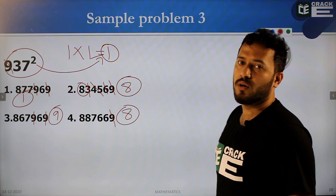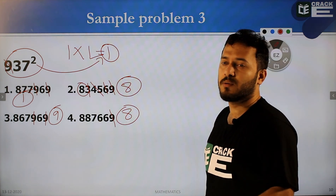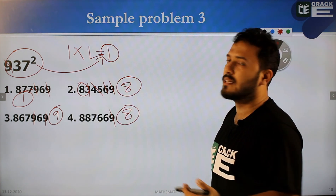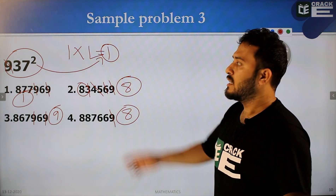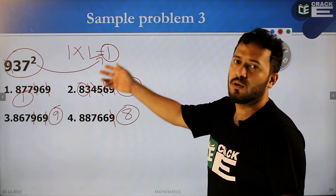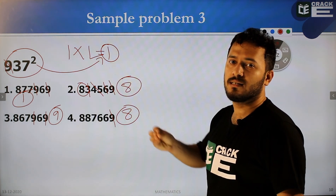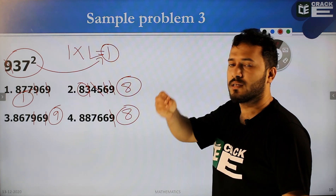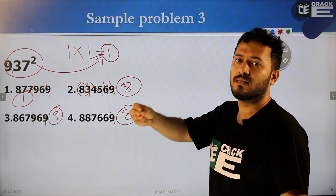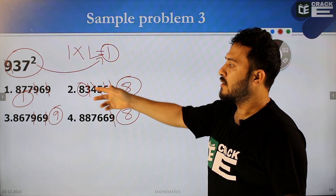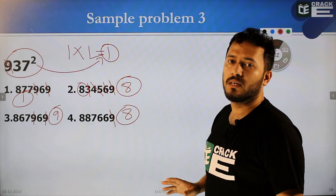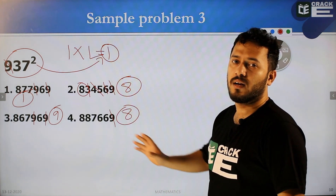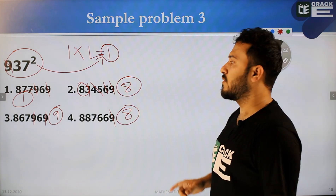If you have a complex problem, just find the digit sum and check that LHS digit sum is equal to RHS digit sum. If you have a question, find the digit sum — it will be easy to solve.